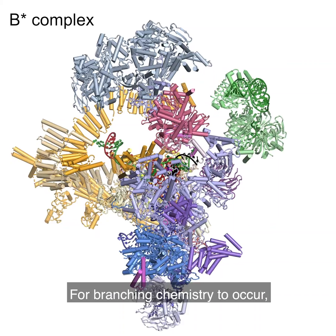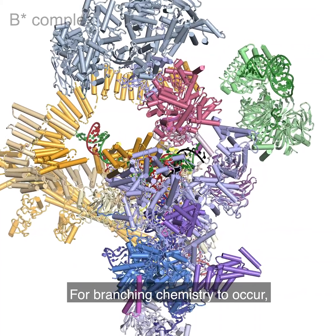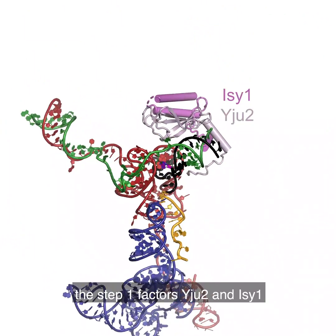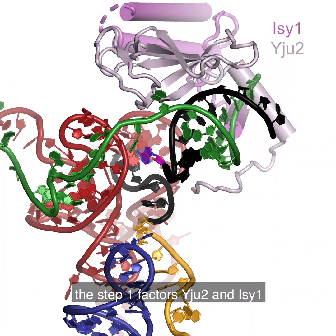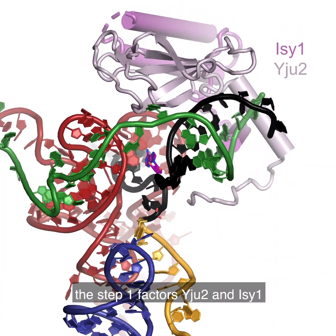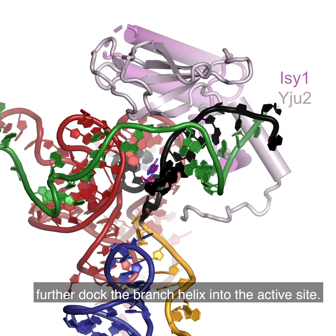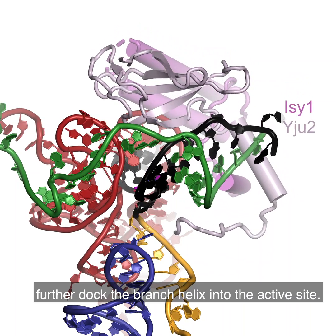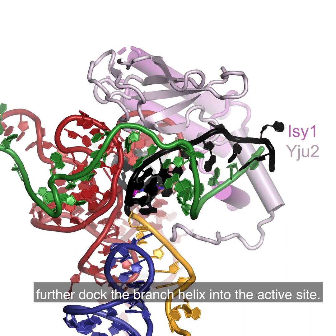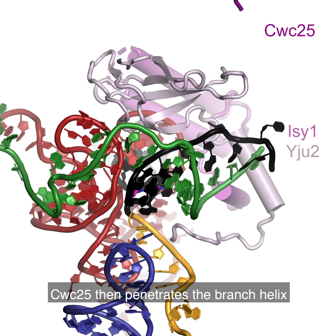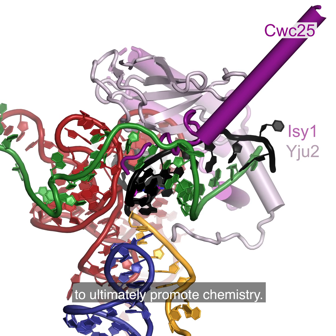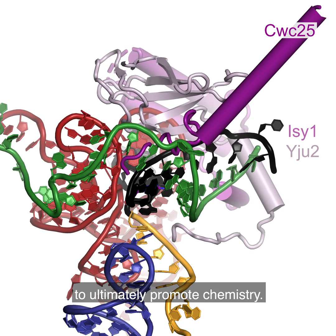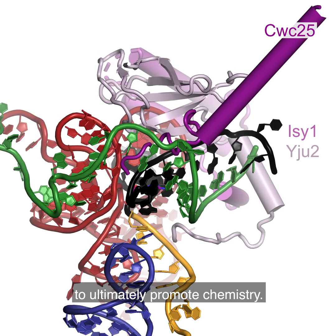For branching chemistry to occur, the step 1 factors YJU2 and ISI1 further dock the branch helix into the active site. CWC25 then penetrates the branch helix to ultimately promote chemistry.